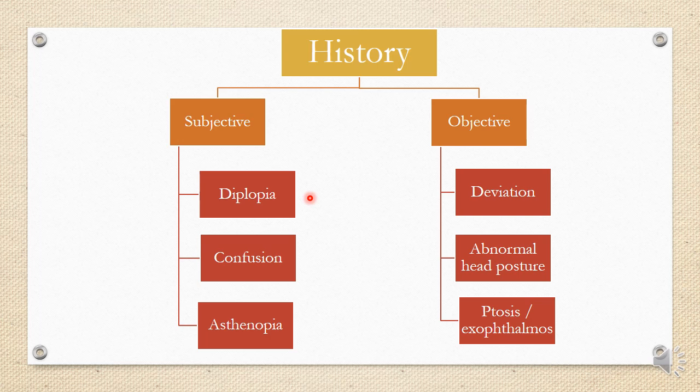For confusion, it occurs basically due to diplopia — the patient feels more confused in a particular gaze, which gives you an idea of which muscle or direction is causing problems. Finally, because of these, there would be asthenopic symptoms, that is eye strain, due to difficulty in focusing.